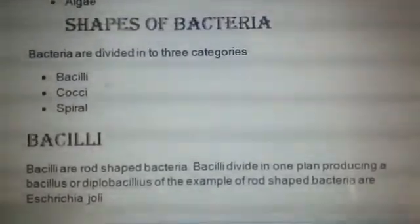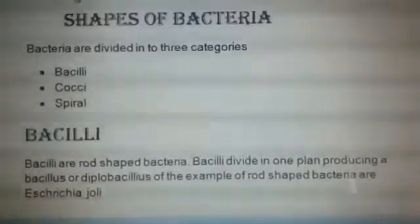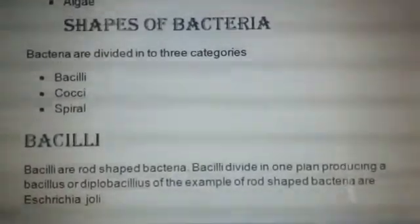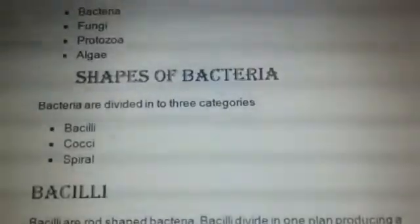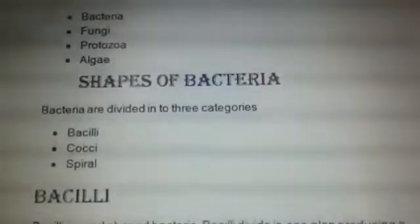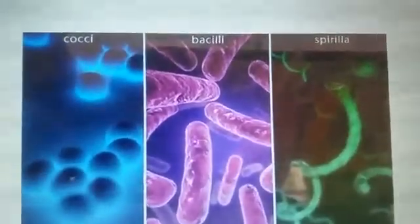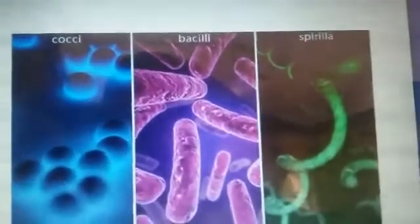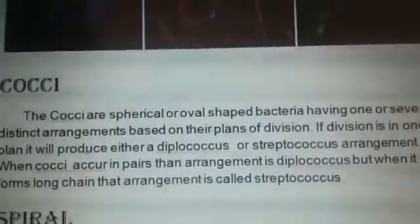What are bacilli? Bacilli are rod-shaped bacteria. Bacilli divide in one plane, producing single bacilli or diplobacilli. For example, rod-shaped bacteria include E. coli. For your ease, I am showing you a diagram of cocci, bacilli, and spirilla — cocci shapes are like this, bacilli like this, and spirilla like this.